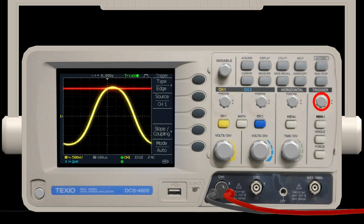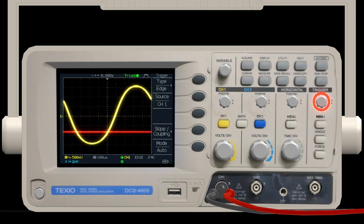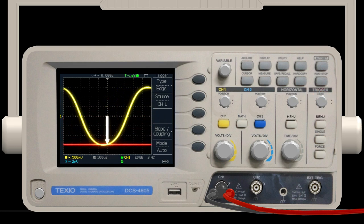On the other hand, if you turn the trigger level knob to the left, the trigger level will go down and the voltage at the center of the waveform screen will become negative.